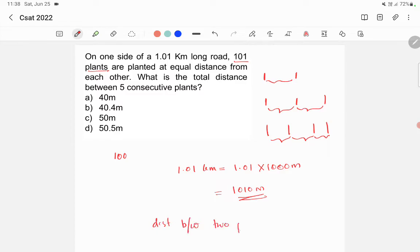Distance between two plants equals 1010 divided by 100. Now here some students will make the mistake - they will divide 1010 by 101 because the question says there are 101 plants. But you have to divide by 100.